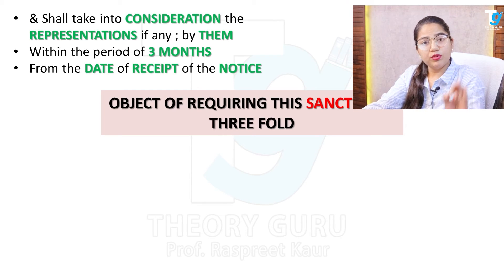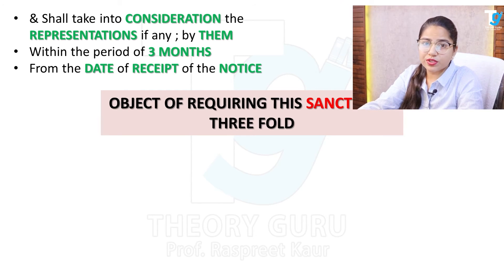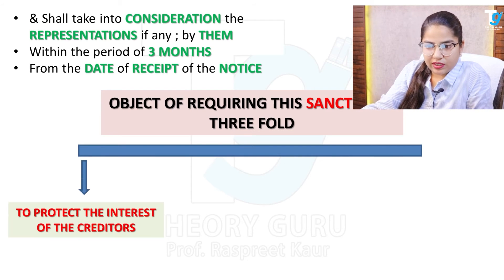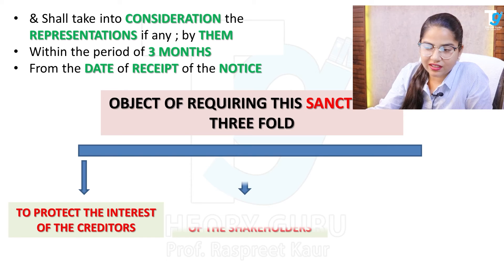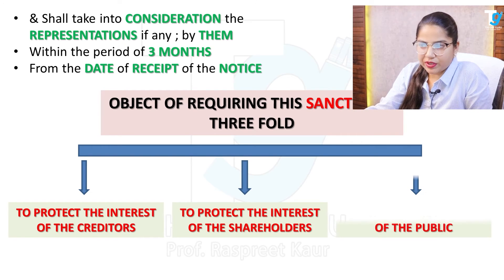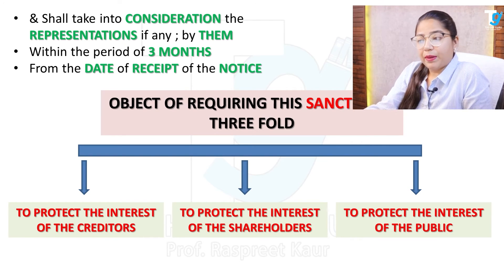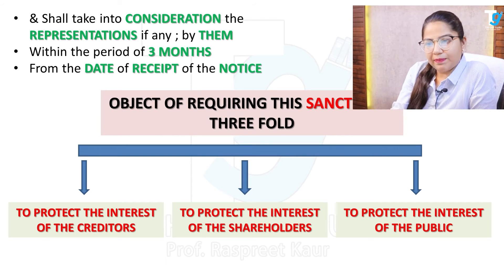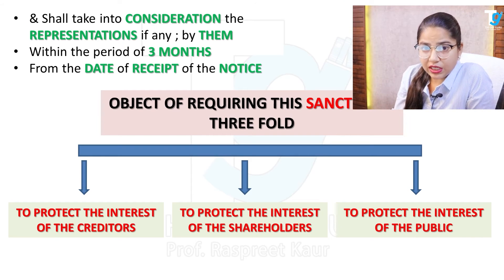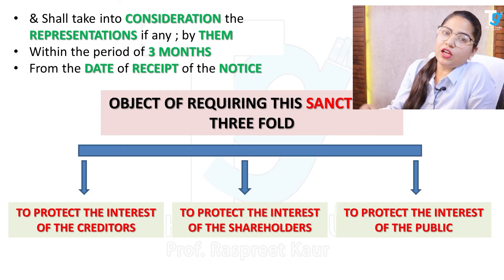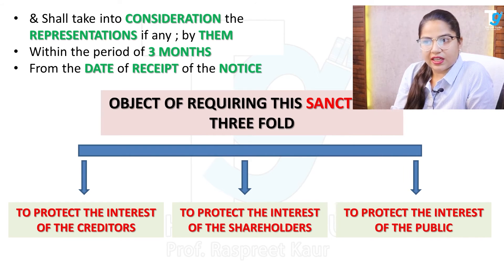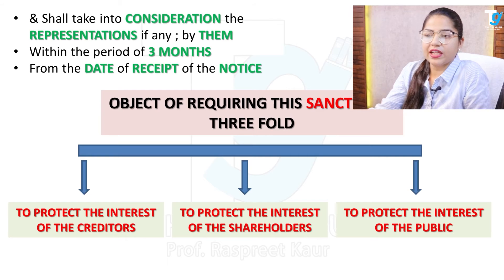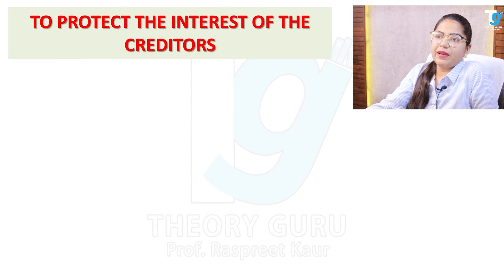The three-fold consent is required for three reasons: to protect the interest of creditors, to protect the interest of shareholders, and to protect the interest of the public. Whenever the tribunal sanctions any application, it will first consider whether any of these three groups is harmed by the reduction of capital — and if so, it will not grant sanction or permission to reduce capital.